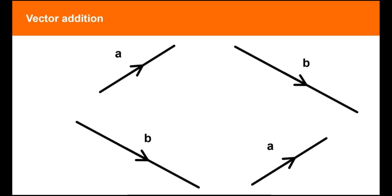Think about two non-parallel vectors, a and b. Then a plus b is the translation of a followed by the translation of b.